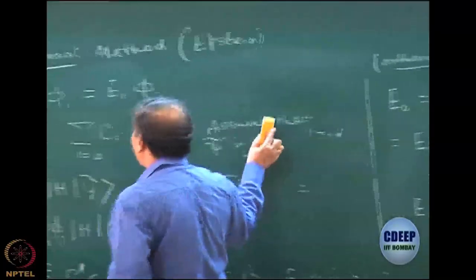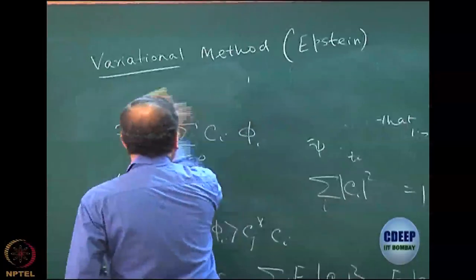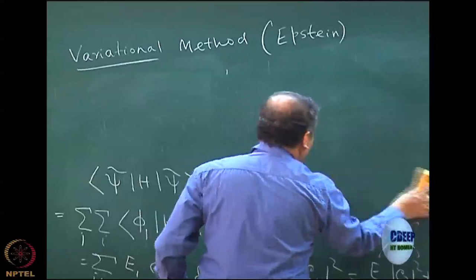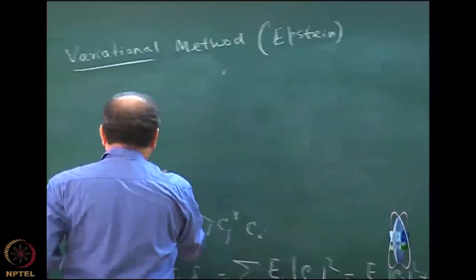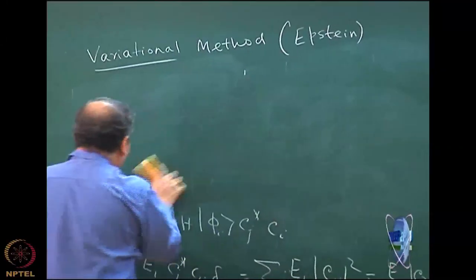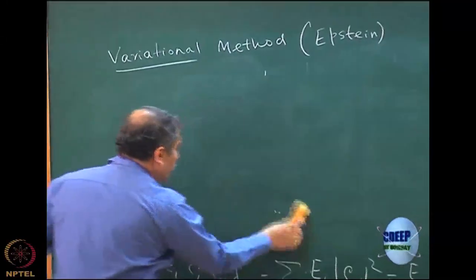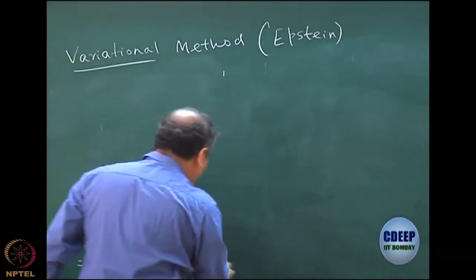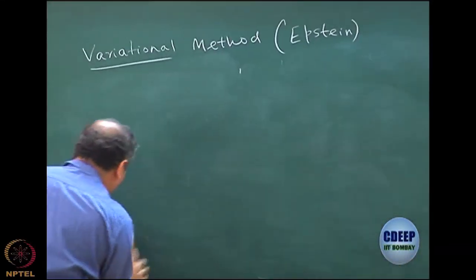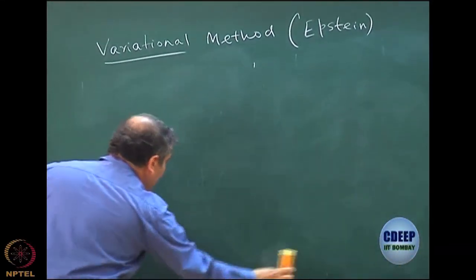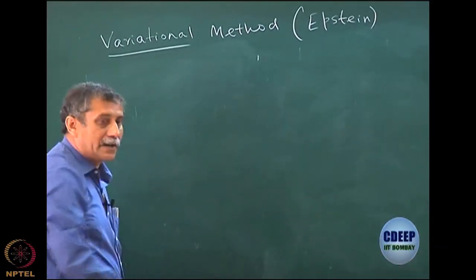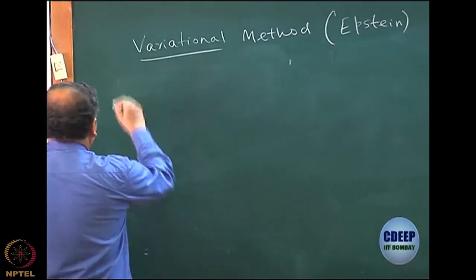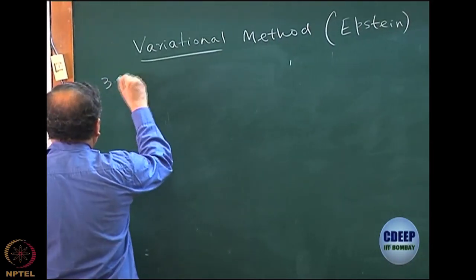There was a specific variation that we did, which was called the linear variation method, and I will also remind you of that because that was very interesting. On the subject of variation, this may not be required immediately, but it will be required at some point. So the third is linear variation.